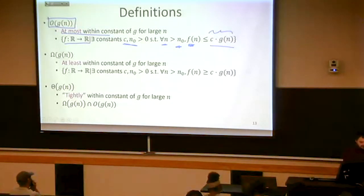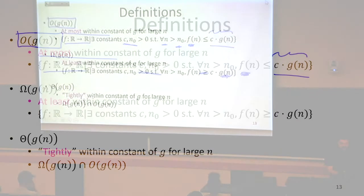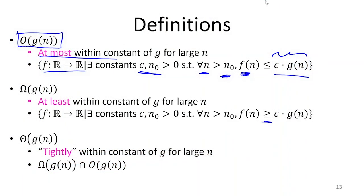For big omega, we have exactly the same thing except we switched the inequality. We said greater than or equal to instead of less than or equal to. That's exactly the same. Big theta is the intersection of the two. So something that satisfies both definitions is big theta.